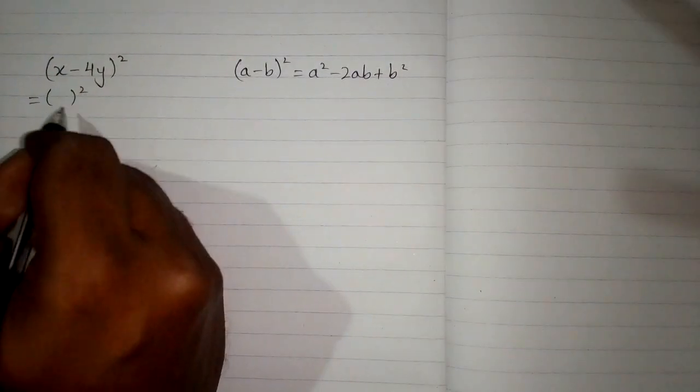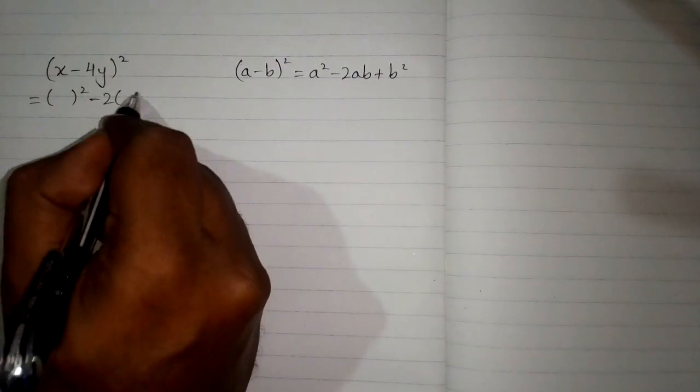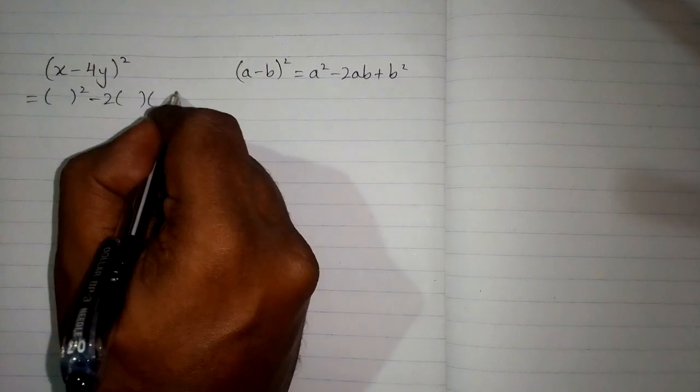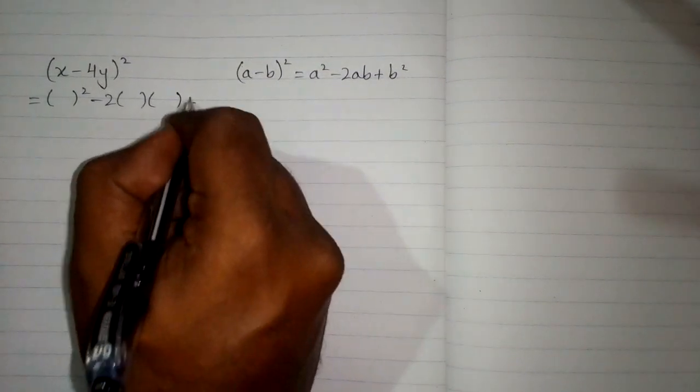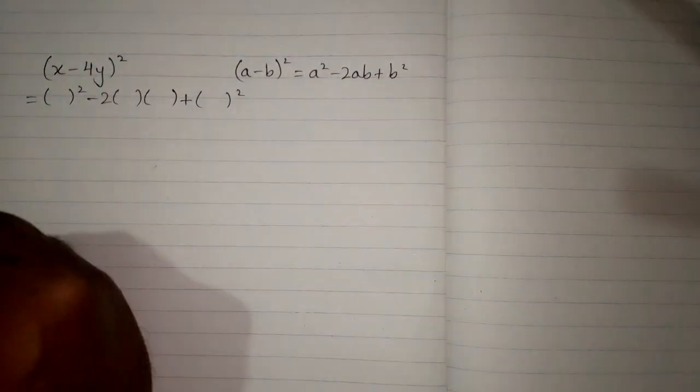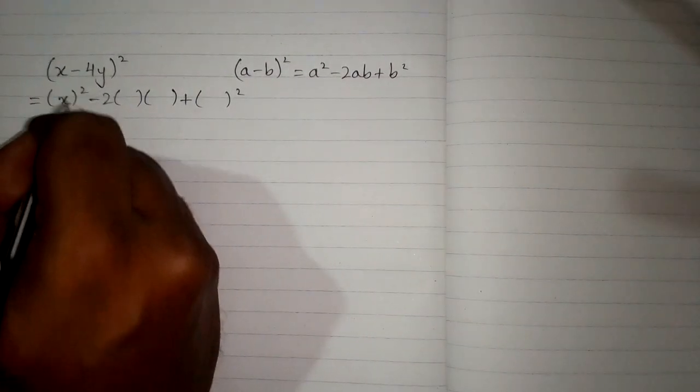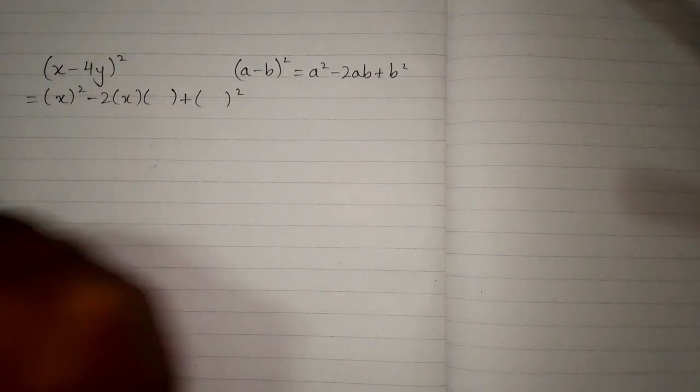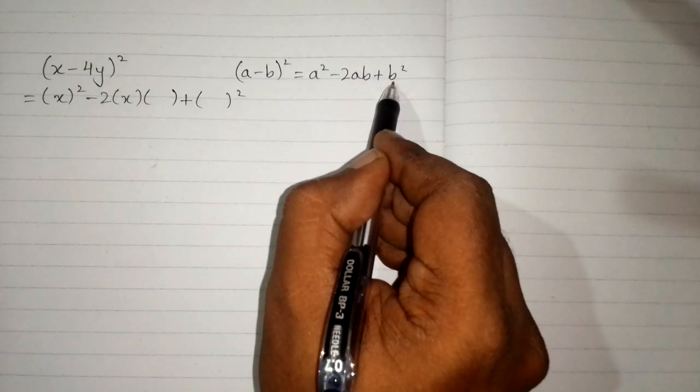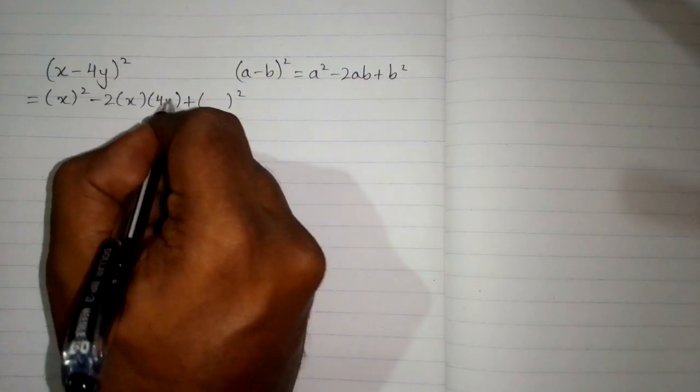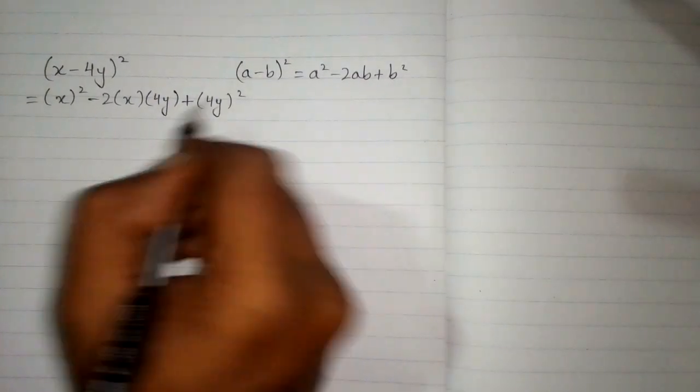So first we have a square, then minus 2 times a and then b, plus b square. So here a is x, so we will put x over here and over here. And in place of b we have 4y, so we will put 4y over here and over here. We will write 4y in these brackets.